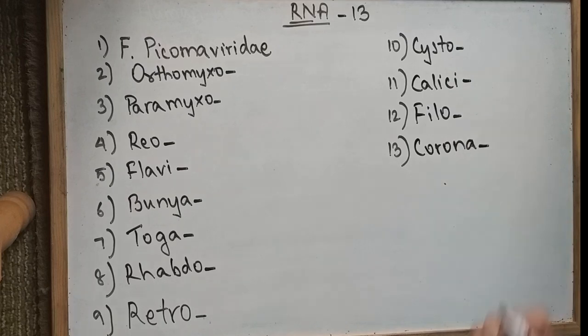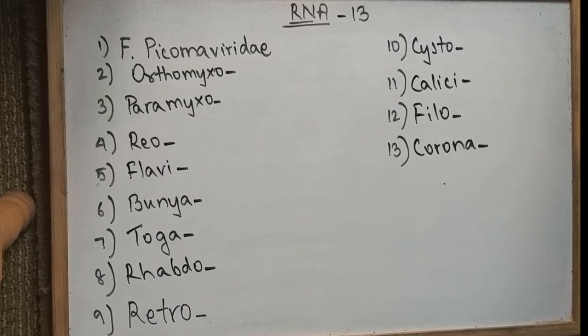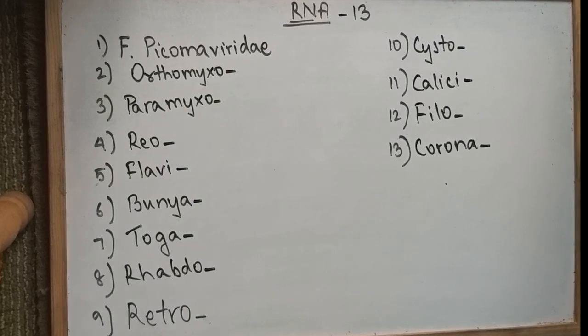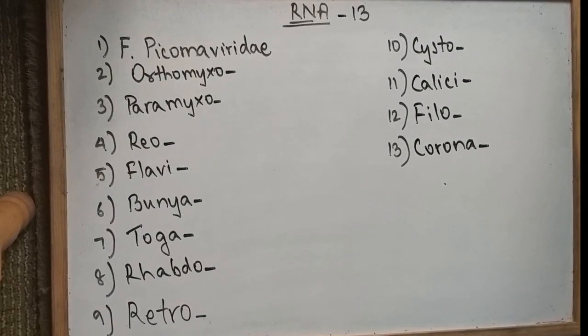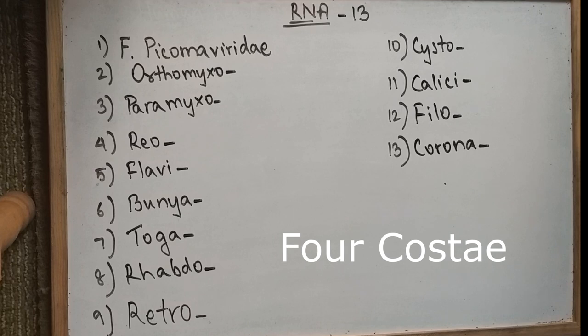Those who need a mnemonic, here goes: Poor old Papa Rio fell back, tugging rope, really carelessly, cracking for coste.